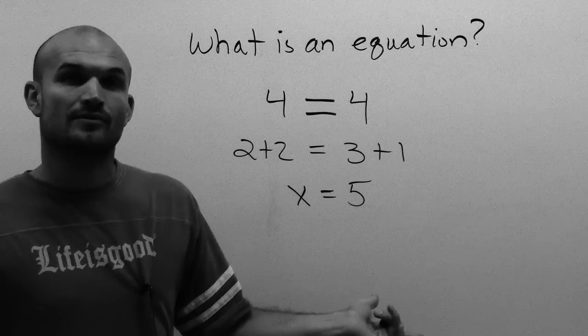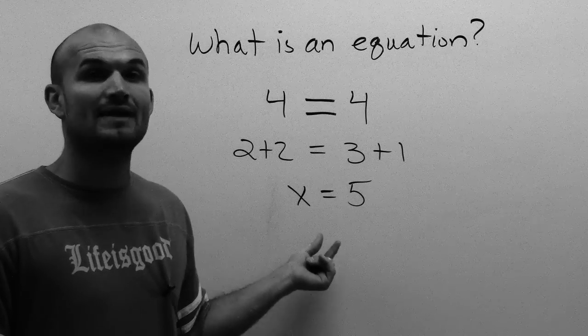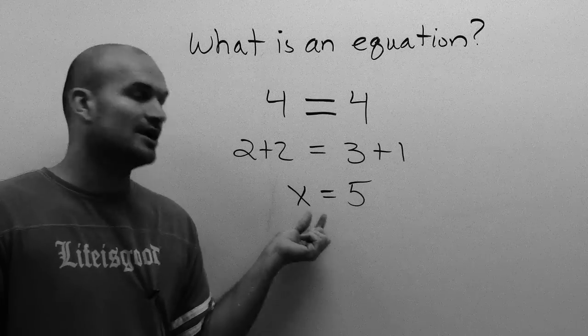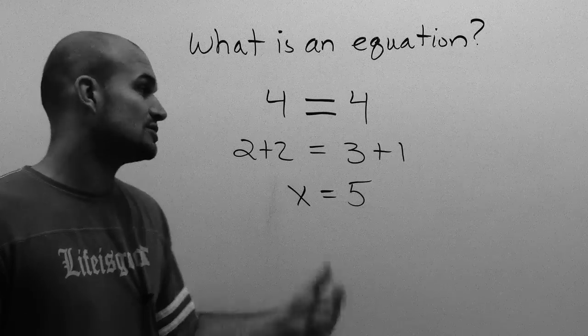x has to be five. So you could say the value of x in this equation is equal to five. That's why we say x equals five, because the value of x is five for this to be true.